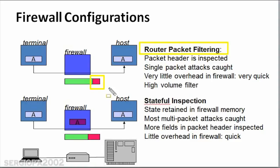Because only part of the header is inspected, a lot of packages can go through the firewall very quickly, but this also means it's not as secure as other types. It creates very little overhead, so single packet attacks will be caught mostly.